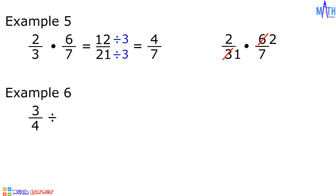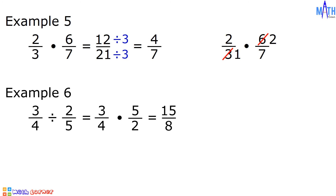Example number 6: 3 over 4 divided by 2 over 5. In dividing fractions, we will multiply the dividend by the reciprocal of the divisor. So we have 3 over 4 times 5 over 2. 3 times 5 is equal to 15, over 4 times 2 is equal to 8. The answer is 15 over 8. We can express 15 over 8, which is an improper fraction, as a mixed number: 15 divided by 8 is equal to 1 with a remainder of 7. So we have 1 and 7 over 8.